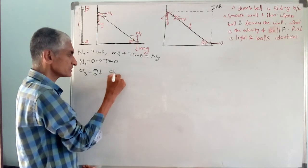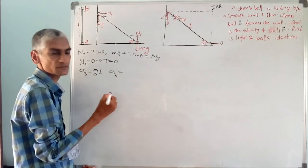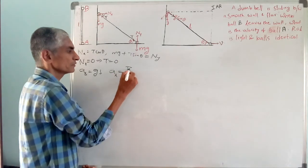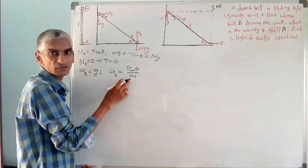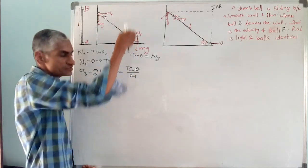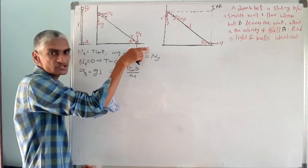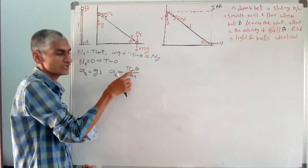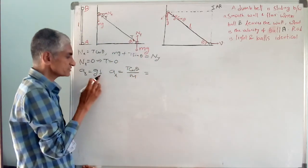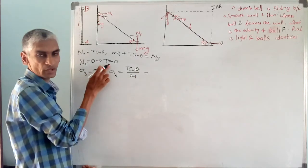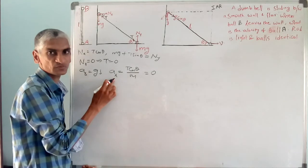So acceleration of ball A is T cos theta by M in the horizontal direction, and net force in the vertical direction is zero. Since T equals zero at the given condition, acceleration of A is also zero.